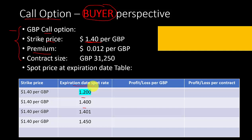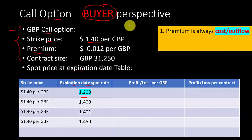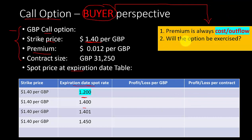For an American option holder you can exercise anytime you want. However, for simplicity we assume the buyer holds the contract until the expiration date, then looks at the market to find the spot rate and makes the decision accordingly. Before doing the math, remember two things: first, for the buyer the premium is always a cost — always an outflow. Second, you have to answer the question: will the option be exercised? That is critical because if it is exercised, profit or loss is calculated one way; if not exercised, we use a different approach.